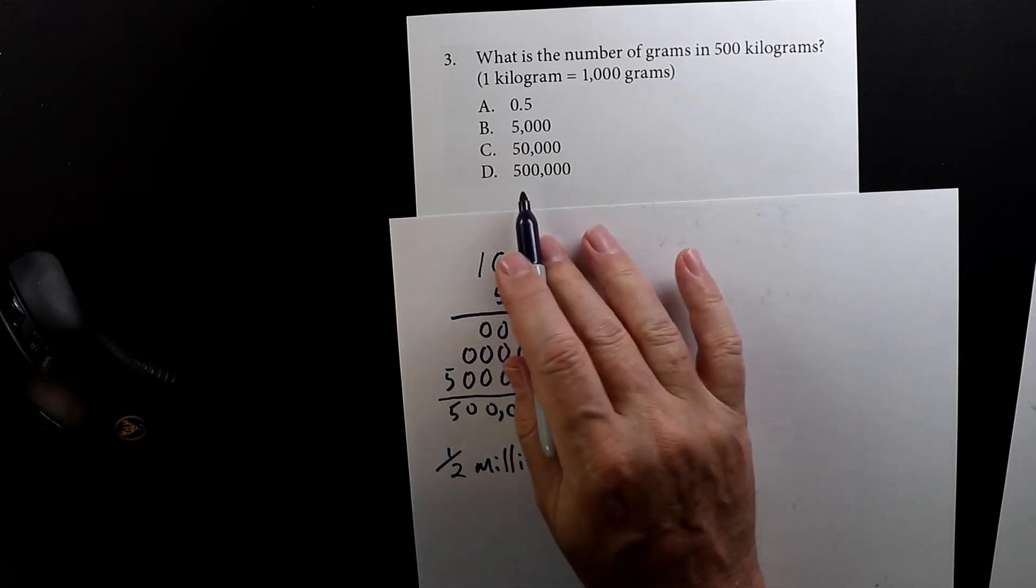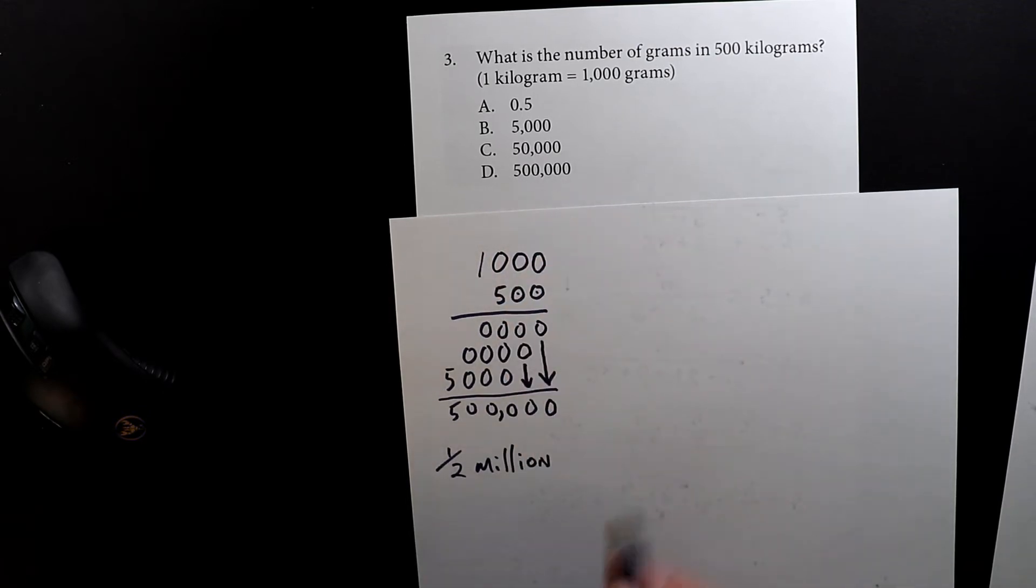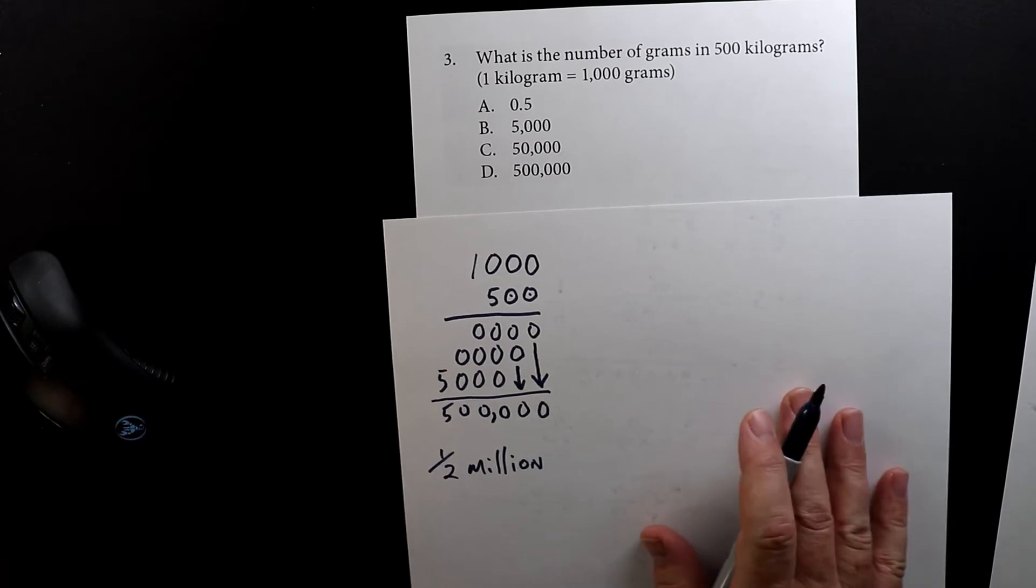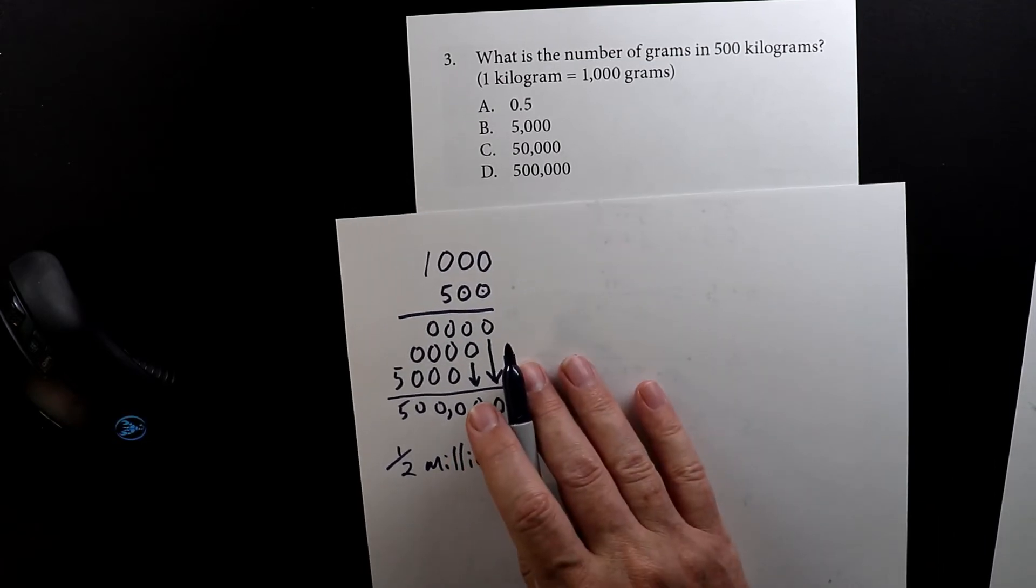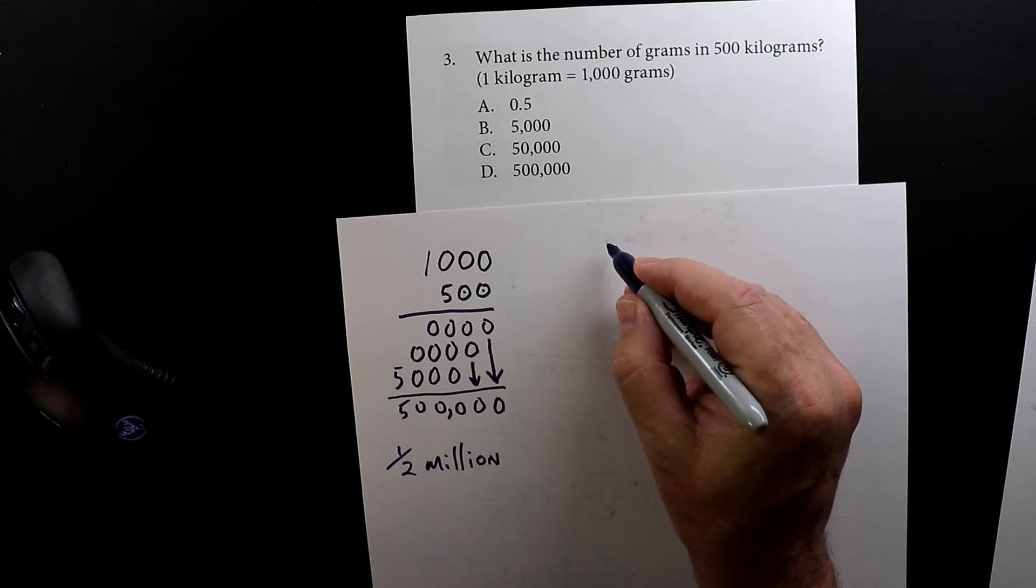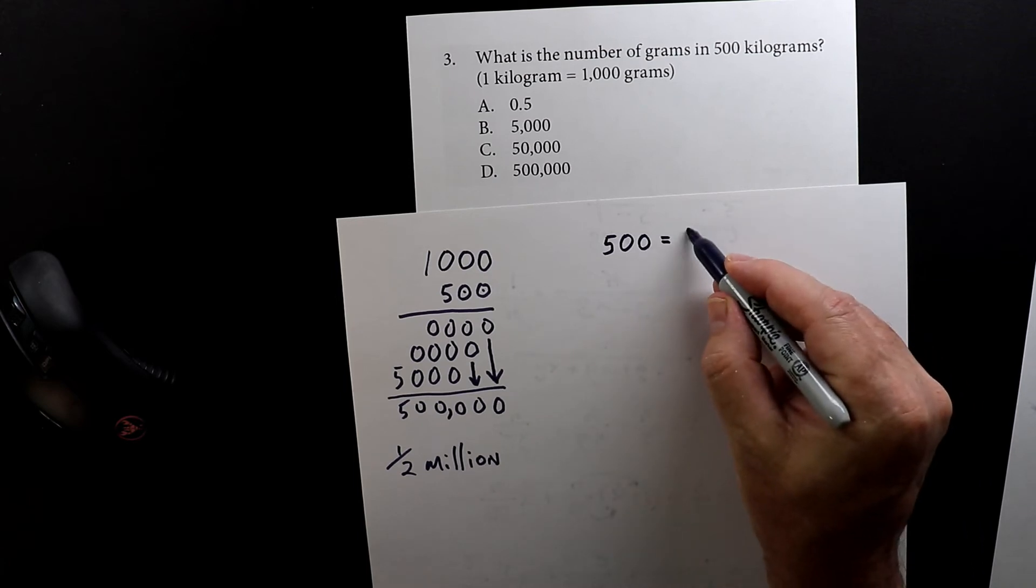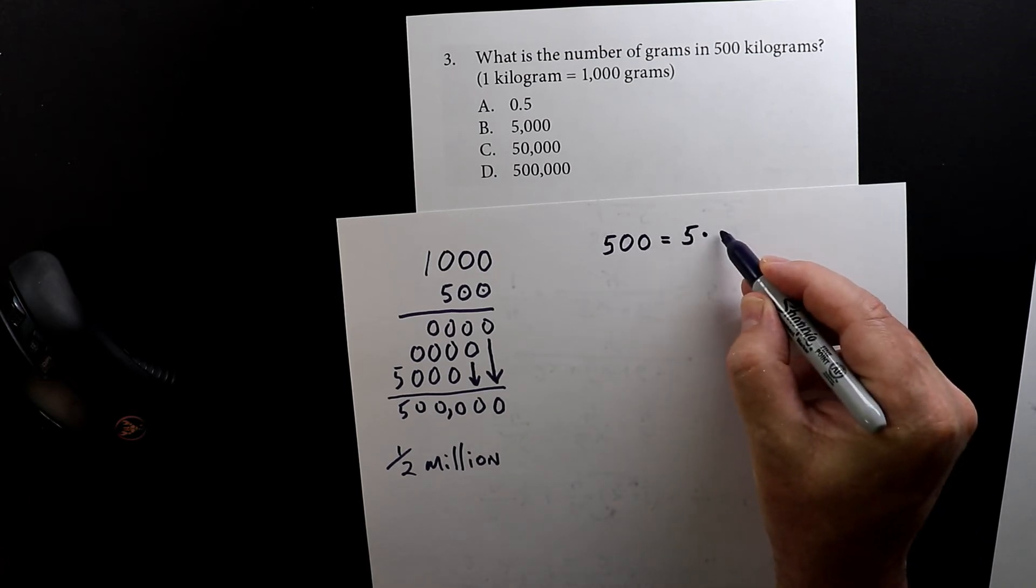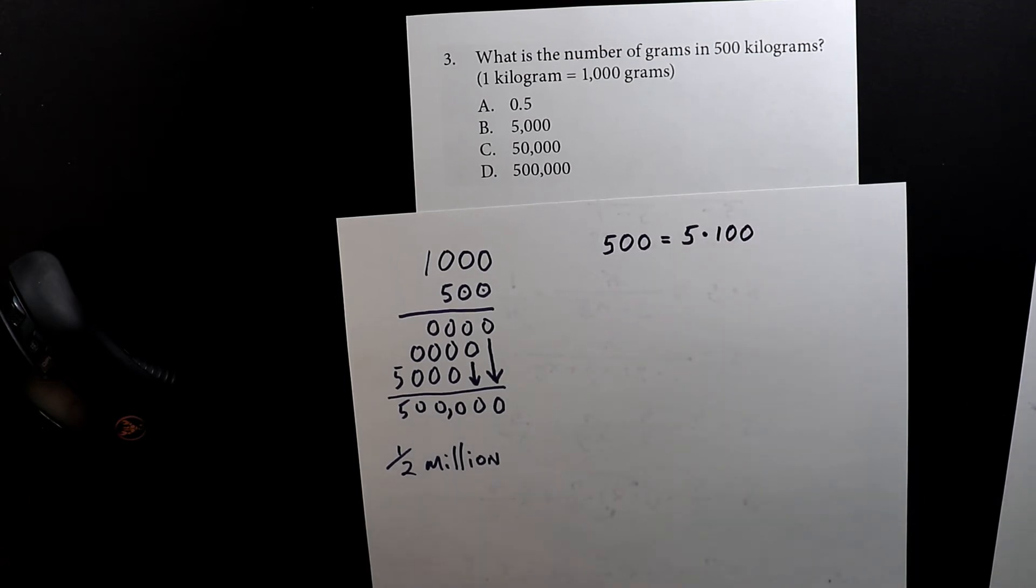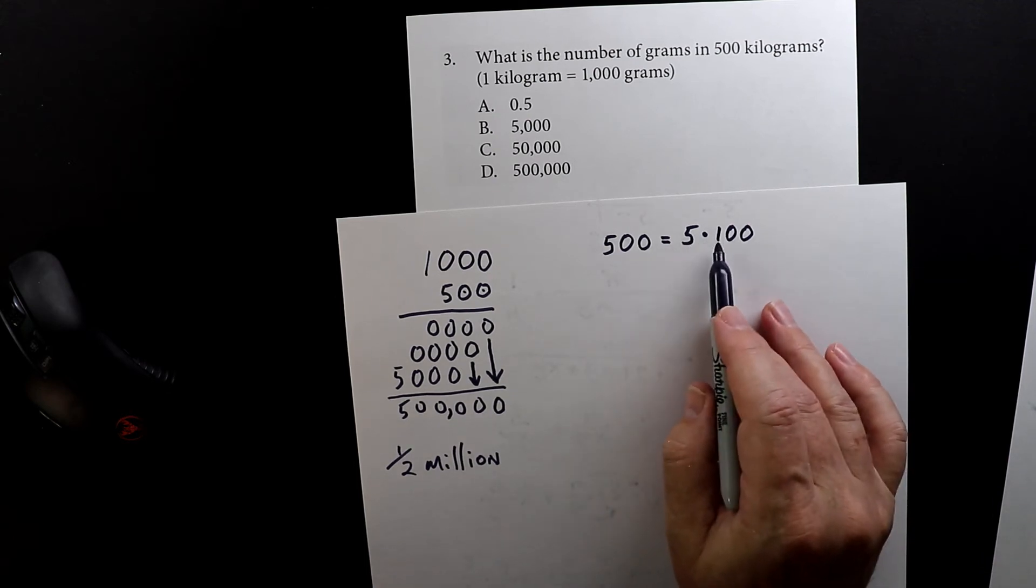So that would be D right there. Now I'm going to show you another way to do this, so we can do a quick review of exponents. If we have 500, 500 equals five times 100, right?